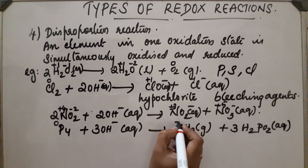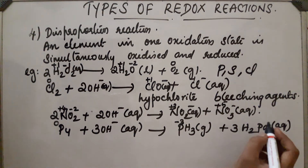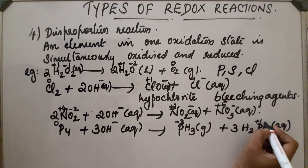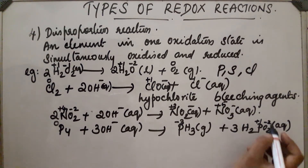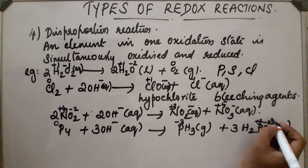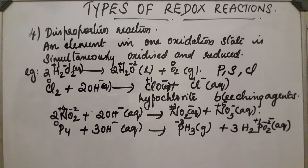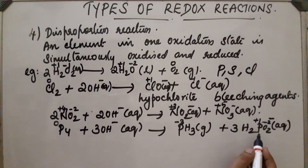In the P₄ reaction, phosphorus starts at a zero oxidation state. It decreases to minus 3 in PH₃ (reduction) and increases to plus 1 in H₂PO₂⁻ (oxidation). Since both oxidation and reduction take place simultaneously, this is another disproportionation reaction.